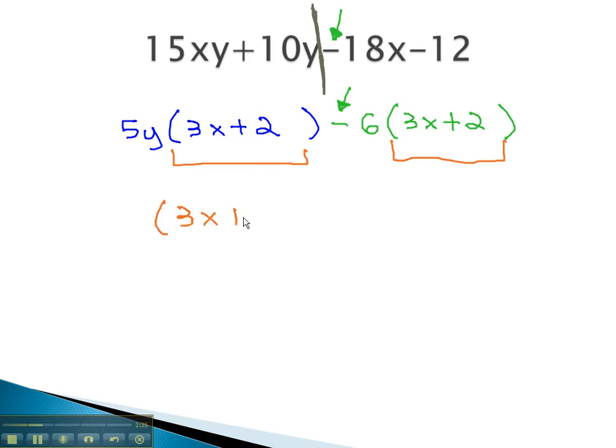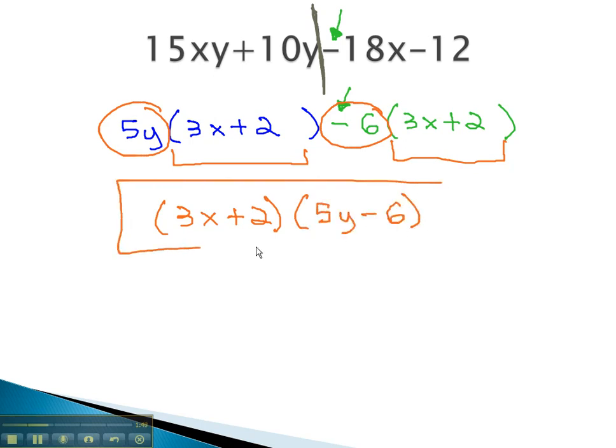3x plus 2 is one of our factors. The other factor is what's left when we factor that out, 5y minus 6. And now we have factored our expression.